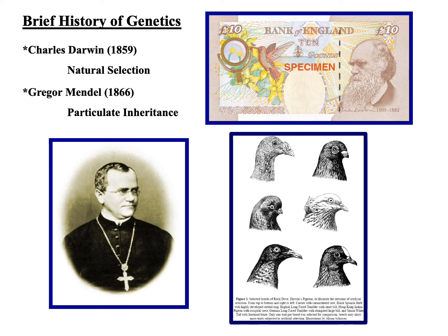Now let's talk about Gregor Mendel. We'll cover his body of work in detail in an upcoming lecture. Mendel proposed an idea known as particulate inheritance, which was a complete opposite to blending inheritance. What Mendel proposed was that there is a specific unit that gets passed on from generation to generation, and those units retain their identity in subsequent generations — completely different from the concept of blending, where traits were thought to blend together in the offspring.